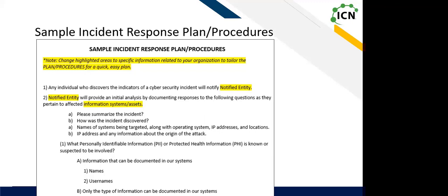The very last part of the plan is a breach checklist — what we do here at the ICN — going down who we need to notify, the kind of information we want to collect, as well as who we need to notify internally and then out to the federal level. The very last piece is that review and response — updating the policies and completing that after-action report that a lot of people skip. Making sure you do that is very, very important.